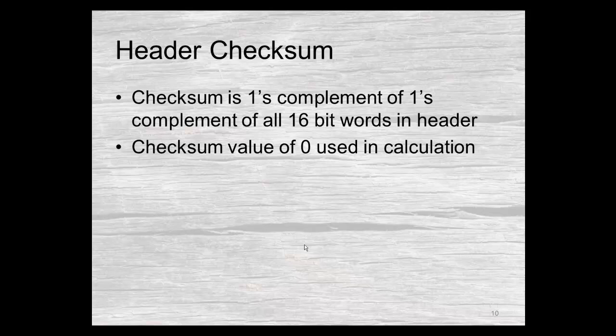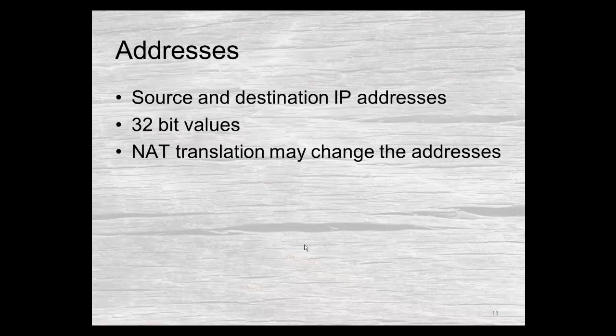Don't worry about what a ones complement is at this point — essentially it is a way of expressing a binary number. The address fields, both source and destination in IP version 4, are 32-bit values — those are your IP addresses. In version 6 they would be 128-bit values. If you are using NAT translation, those addresses may be changed by a router, but unless you're using NAT translation, which we'll talk about in the future, those source and destination values do not change over the course of your trip.